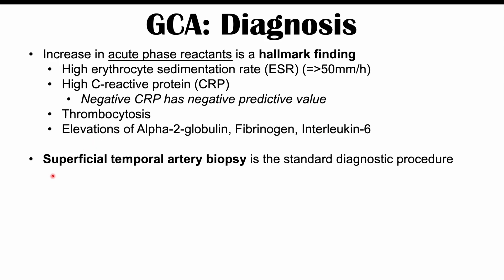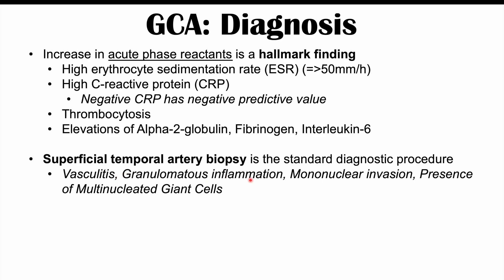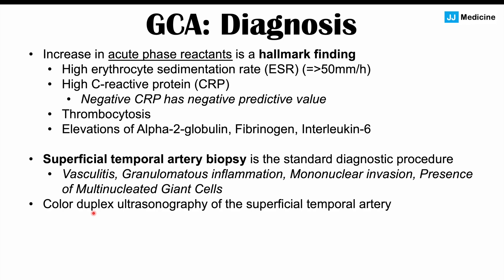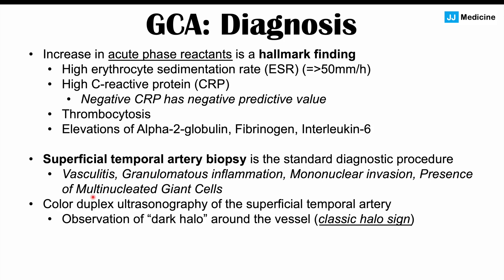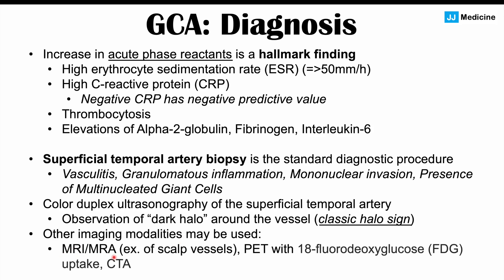A superficial temporal artery biopsy is the standard diagnostic procedure, though not all cases are diagnosed this way. Biopsy findings include vasculitis, granulomatous inflammation, mononuclear invasion, and the presence of multinucleated giant cells. Color duplex ultrasonography of the superficial temporal artery can also be used, revealing a dark halo around the vessel — the classic halo sign. Other imaging modalities include MRI and MRA for scalp vessels, a PET scan with 18-fluorodeoxyglucose (FDG) uptake, and CTA.